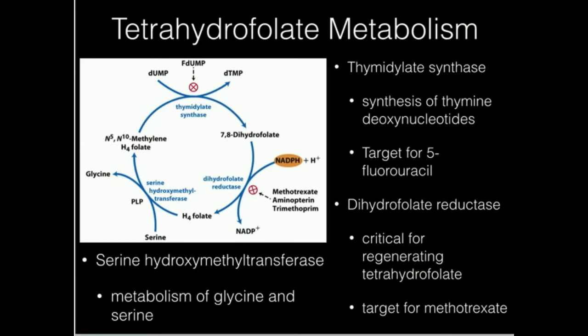Folate metabolism in humans is a prime target for killing cancer cells. Cancer cells divide much more quickly than normal cells, so they replicate their DNA faster and need more deoxynucleotides — including thymidine, or DTMP. The thymine base must be made from uracil, and the enzyme responsible is thymidylate synthase.